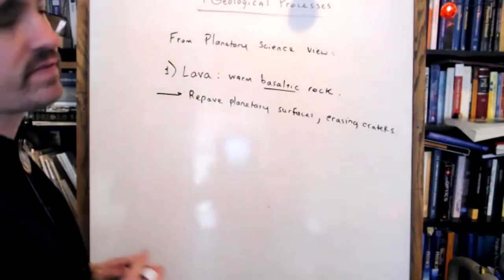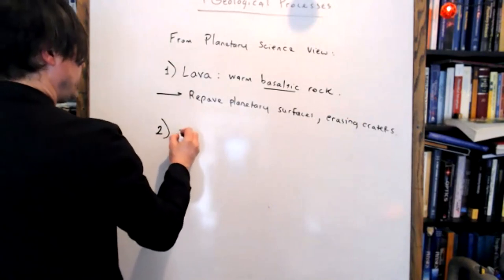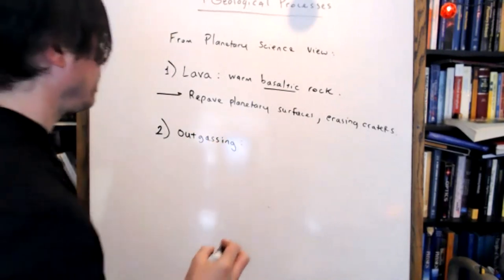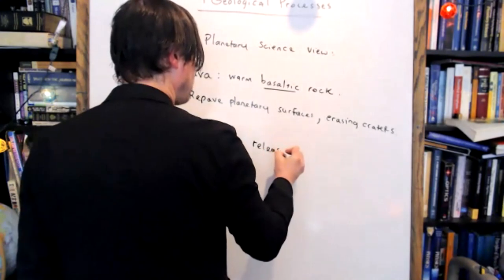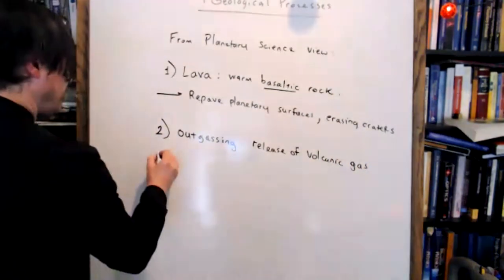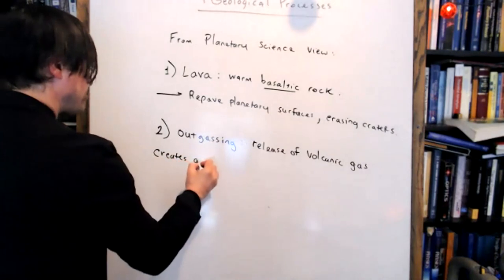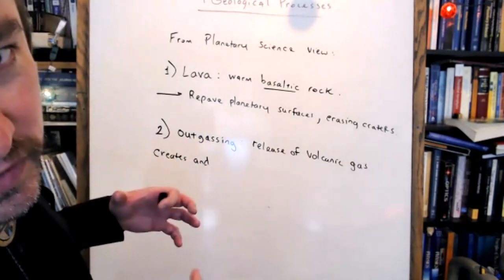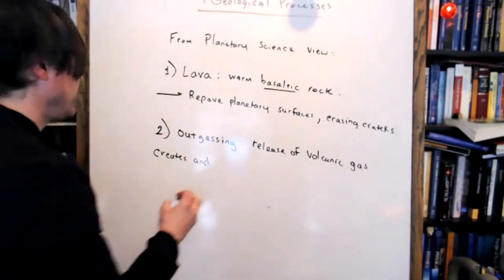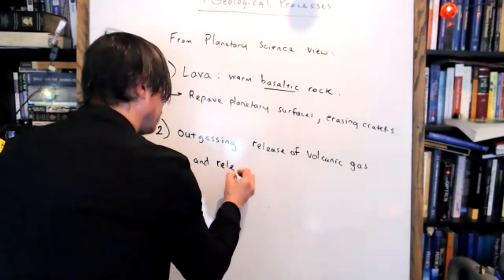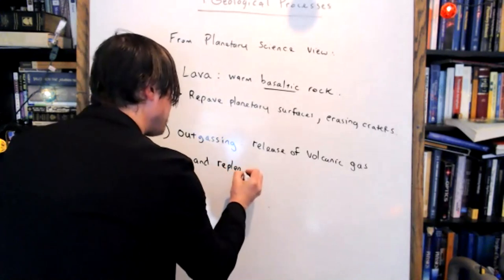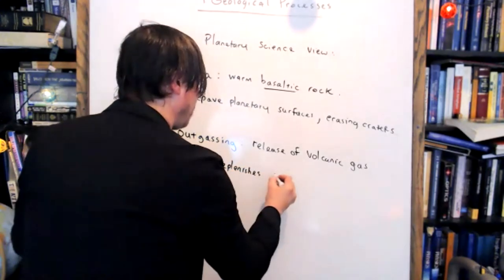Lava repaves planetary surfaces and it erases craters — it creates fresh new planetary surface. The second effect is outgassing, where the release of volcanic gas both creates and replenishes atmospheric gas. On all planets and moons that have atmospheres, we usually find some type of volcanism at work.